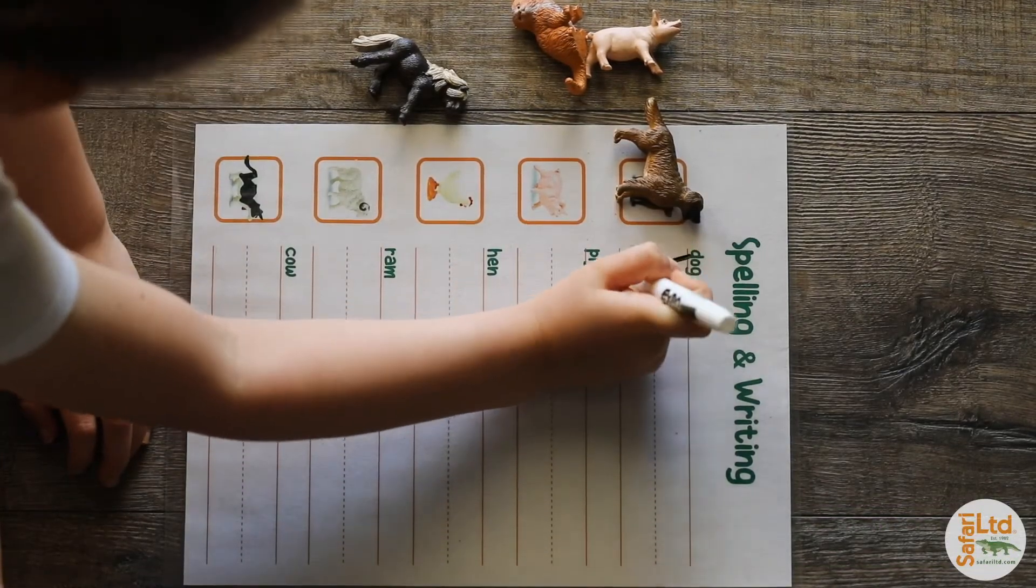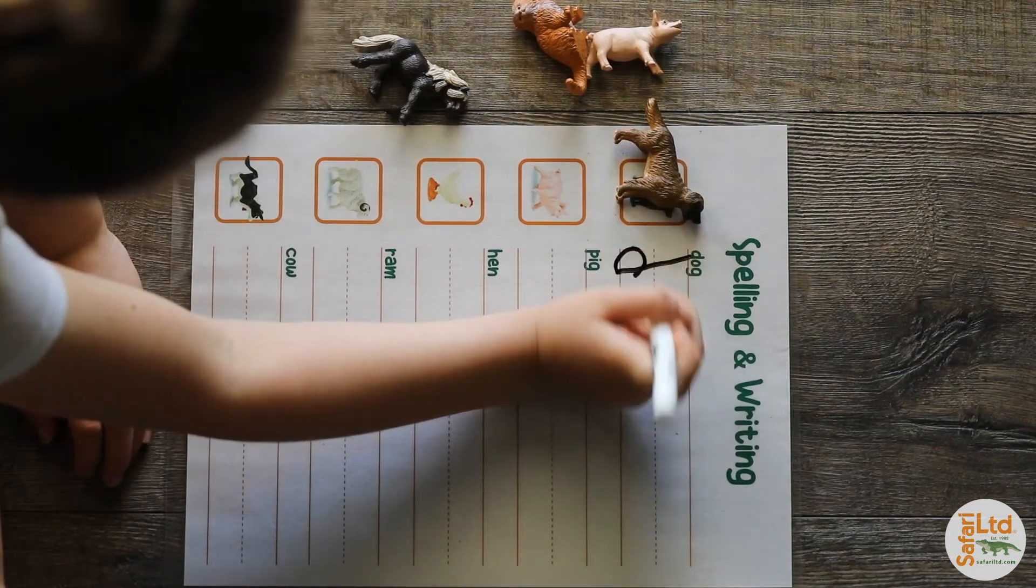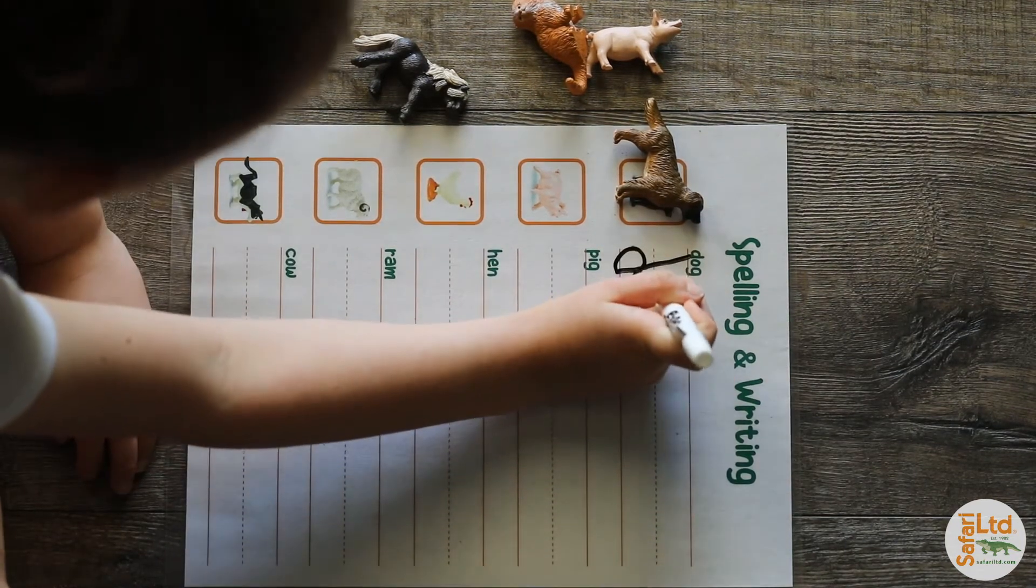Here she's matching the animal to the picture on the sheet. Then she's copying the written word while saying the animal name aloud.